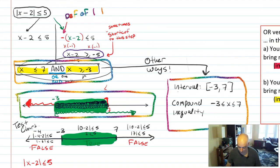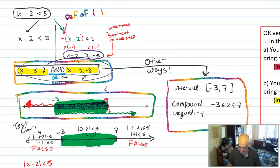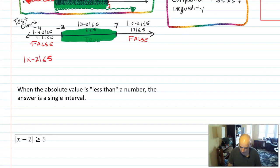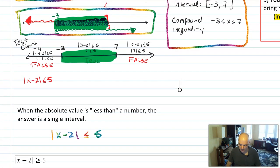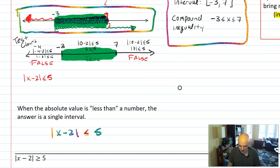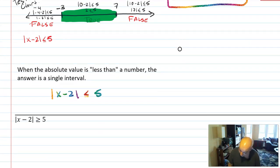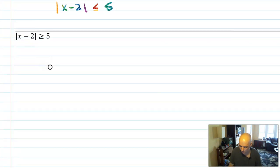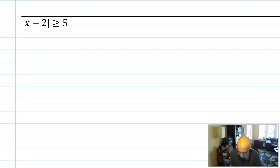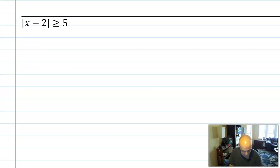Here's the key takeaway from this example. When you find that the absolute value is less than a number, the answer is always going to be a single interval — a closed, bounded interval. On the other hand, changing just the direction of the inequality actually changes how the answer comes out.